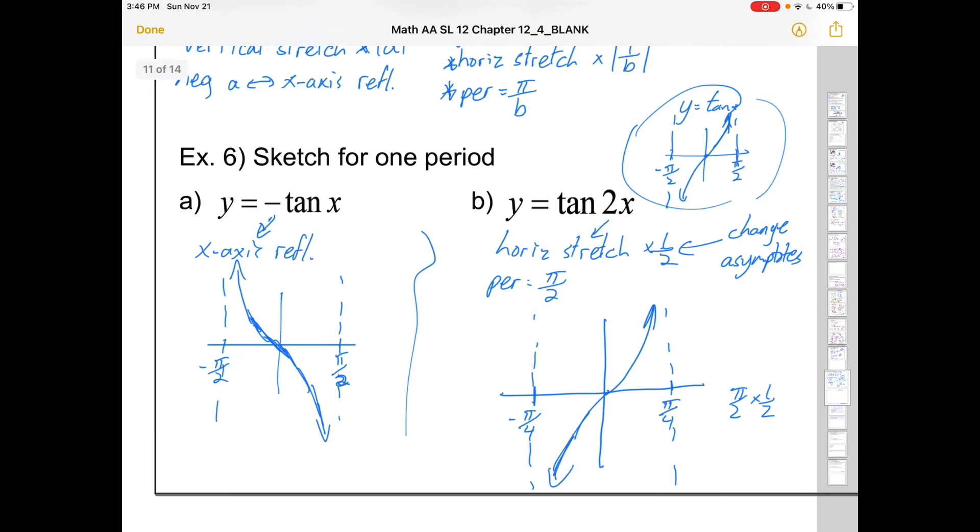You might be saying, well hold on now. I thought you said that it's going to have a period of π over 2. Let's think about this. If we were to figure out how wide this is, it's π over 4 here and π over 4 here. Oh my gosh, the whole thing is 2 quarters of a π wide or π over 2. So it does correspond to the period that we expected. But we just get there by moving our asymptotes where they need to be.